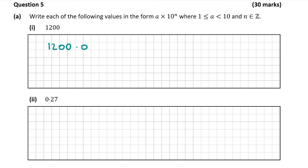It has to be in the form a × 10 to the power of n, where a is between 1 and 10 — that's the important part. That means I need to move the decimal point so that I get my number between 1 and 10. I'm going to move it to the left so that it's between the 1 and the 2, as that's the only number I can make from this that's between 1 and 10 without changing any digits around.